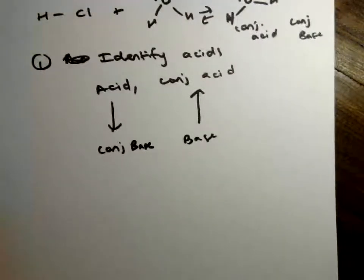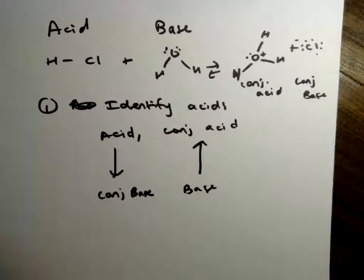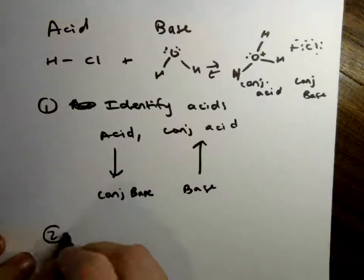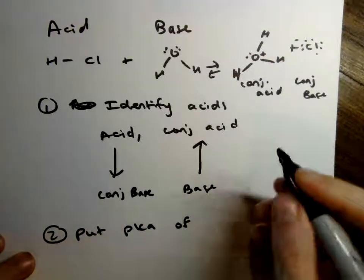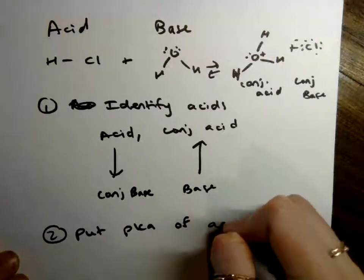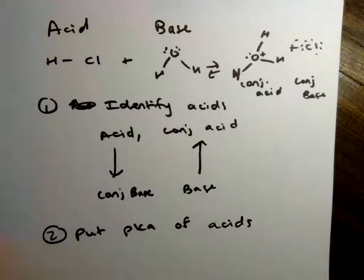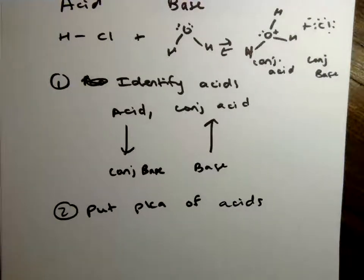So once you've identified the acids, you can use those to determine if the reaction will be the reactants or the products. So what you need to do is put the pKa of each acid. So that acid and the conjugate acid. And that usually means you need to have memorized the pKa's of many things.